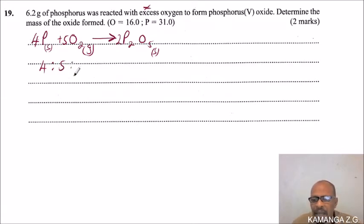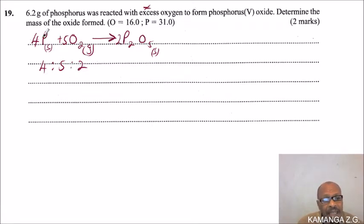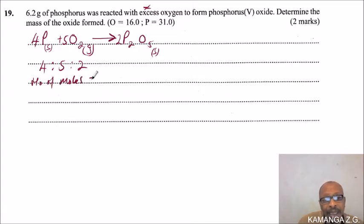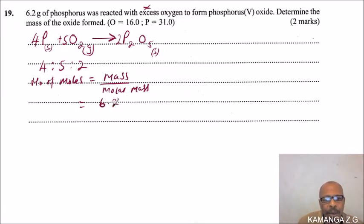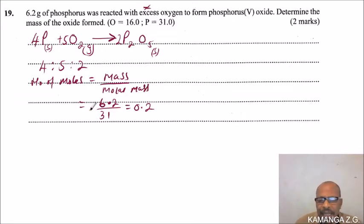The mole ratio from the balanced equation is 4 : 5 : 2. We can now calculate the number of moles of phosphorus. Number of moles = mass ÷ molar mass = 6.2 ÷ 31.0 = 0.2 moles. So we have 0.2 moles of phosphorus.